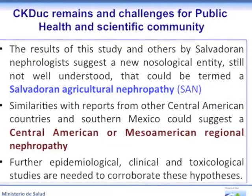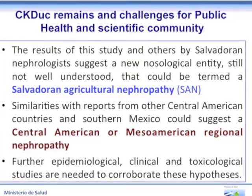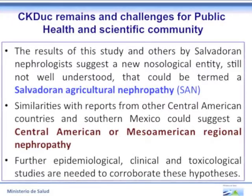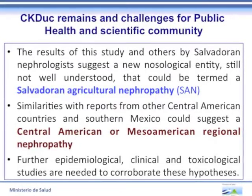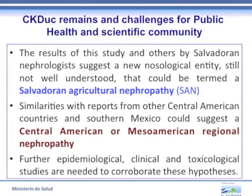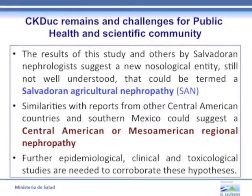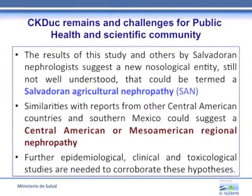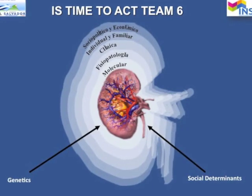Chronic kidney disease of unknown causes remains a challenge for the public health and scientific community. Results from Salvadoran nephrologists suggest a new nosological entity not yet well understood, which could be termed Salvadoran agricultural nephropathy. Similarities with reports from other Central American countries and Southern Mexico could suggest a Central American or Mesoamerican regional nephropathy. Further epidemiological, clinical, and toxicological studies are needed to corroborate this hypothesis. We think it is time to act. Thank you for your attention.